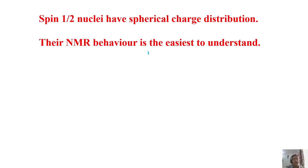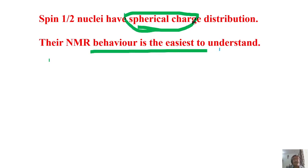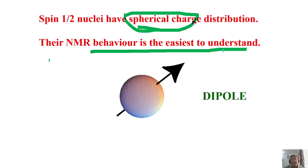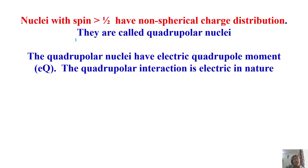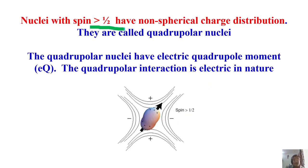Spin-½ nuclei have a spherical charge distribution — they are magnetic dipoles (tiny magnets with two poles: north and south). Their behavior and interaction with magnetic fields is easy to understand. Spin > ½ nuclei do not have spherical charge distribution; instead the charge distribution has a different shape — like a spheroid or ellipsoid — with charges distributed differently.